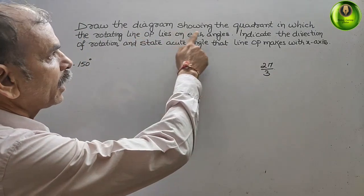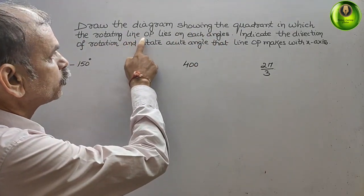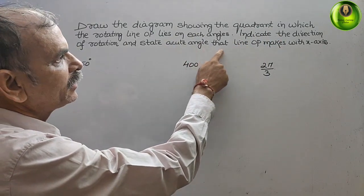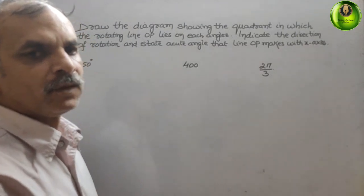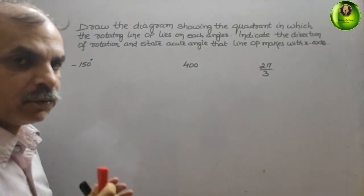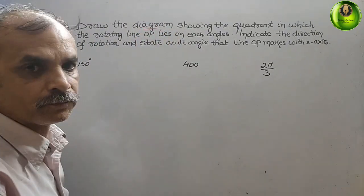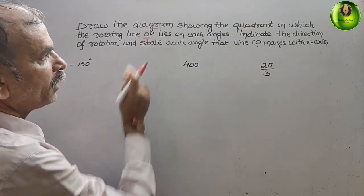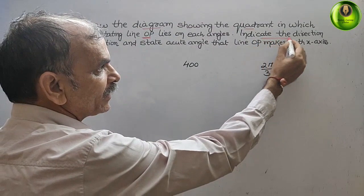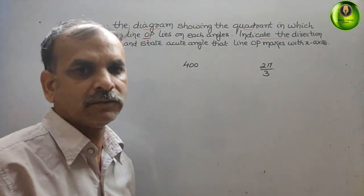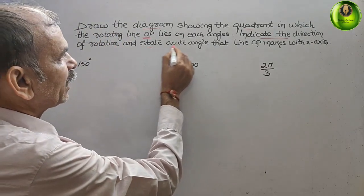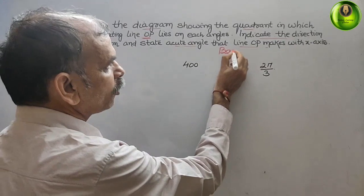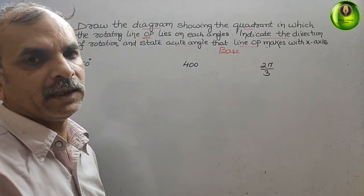Your question is: draw the diagram showing the quadrant in which the rotating line OP lies for each angle. Indicate the direction of rotation — whether it is clockwise or anticlockwise — and state the acute angle that line OP makes with the x-axis. That means we also have to draw the base angle.